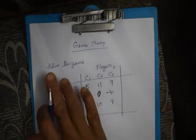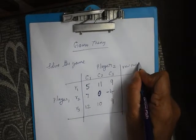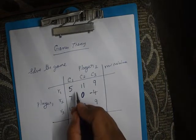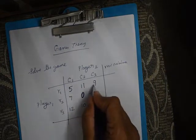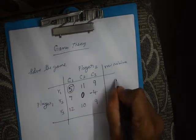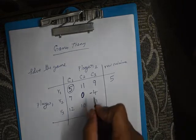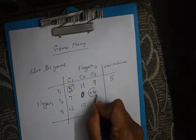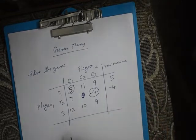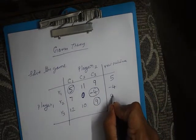To solve the game, the first step is Row Minima. Take the first row and identify the least value, which is minus 5 — circle it and write the value outside the row. Similarly, for the second row it is minus 4 — circle it and write outside. For the third row it is 9 — write the value outside.